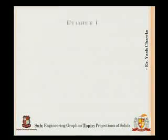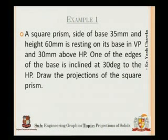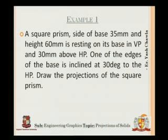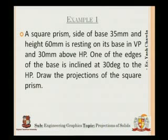Let's begin with the first example, which is carried forward from last time. A square prism with side of base 35 mm and height 60 mm is resting on its base in VP and 30 mm above HP. One of the edges of the base is inclined at 30 degrees to the HP.